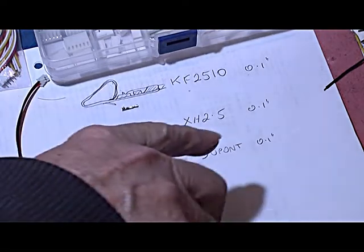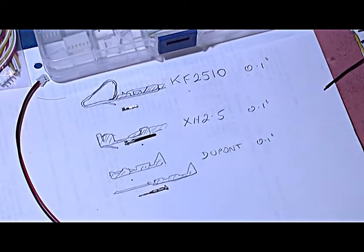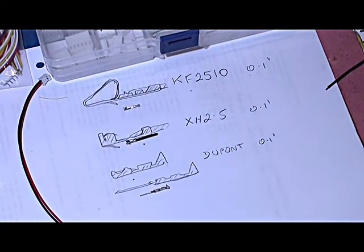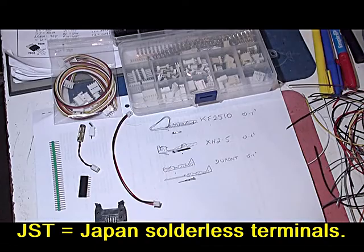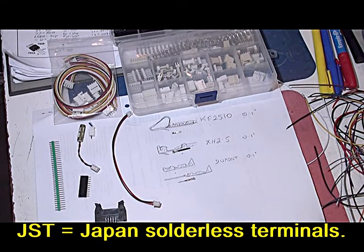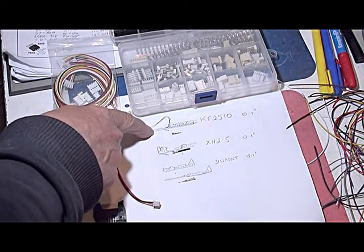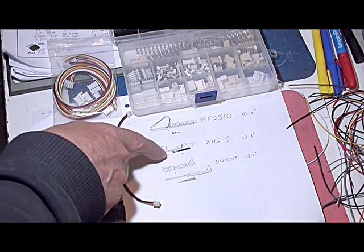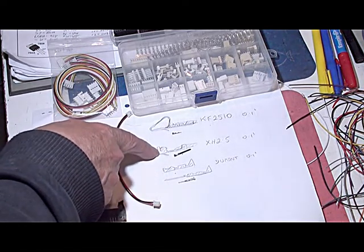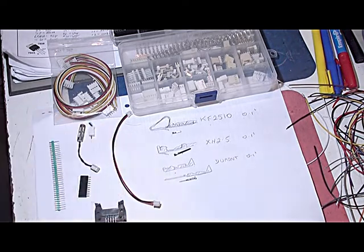You have a choice of what's called the KF2510, the XH2.5, the Dupont and also the 0.1 inch headers. There's also what's called the JST. Now a lot of these connectors look very similar but one thing that you can use to distinguish between the different types is the actual shape of the pin that goes into the housing. This is a KF2510 and has a little loop. This is the XH2.5 and this is the Dupont. This is the male pin and there's also a female pin.